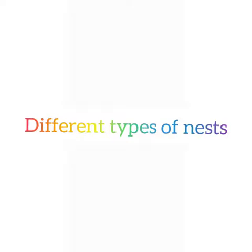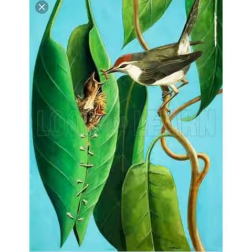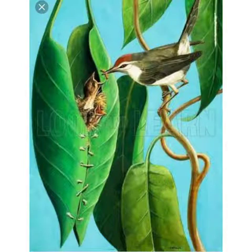Let us discuss different types of nests. This is the tailor bird — you can see how it builds its nest. It uses its beak like a needle to sew leaves together to build a nest. It also uses materials such as thread and wool to sew the leaves. You can see the nest of the tailor bird, with leaves sewn together to make a nest.